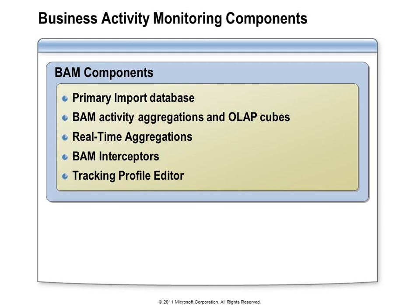Calculating real-time aggregations can be costly in terms of performance, so it's more likely that you will want to use OLAP cubes to calculate those aggregations. Under those circumstances, the data will be copied from the BAM primary import database to the BAM star schema database, which serves as a staging area for the OLAP cubes. The components that actually collect the data written to the BAM databases are known as BAM interceptors — you could think of a BAM interceptor as a wiretap.